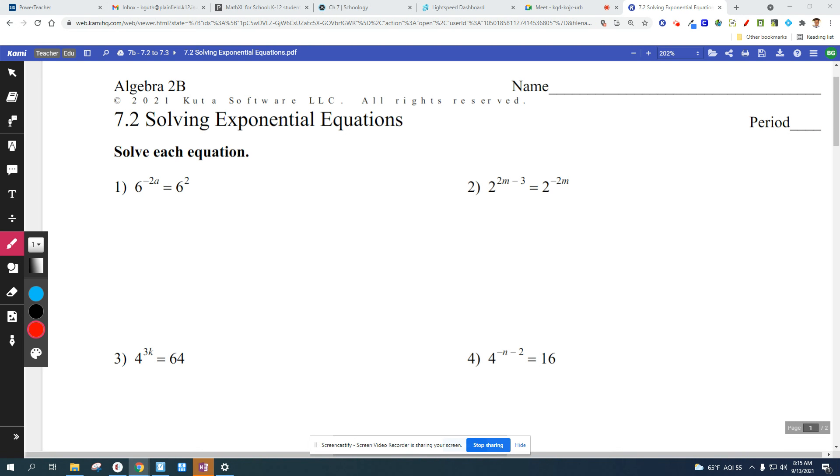Alright, 7.2, solving exponential equations. We're going to solve each equation. So the first one is really simple. When you look at the base and it's the same, all you have to do is compare the two exponents. And so if the six matches, then all we have to do is say that this exponent is going to equal this exponent.